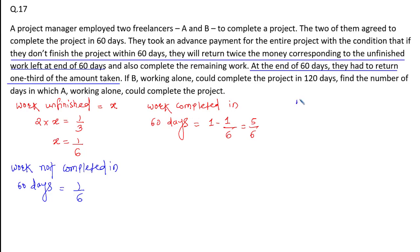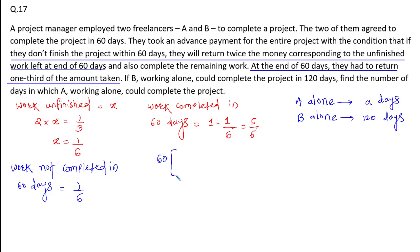Now let's assume that A alone can complete the work in 'a' days, whereas in the question it is given that B alone can complete the work in 120 days. So they work together for 60 days. Per day work of A is one divided by 'a', and per day work of B is one divided by 120. So if they work together, their per day work is one by a plus one by 120. They work together for 60 days, so 60 into their per day work is equal to work done by them in 60 days, which is five by six.